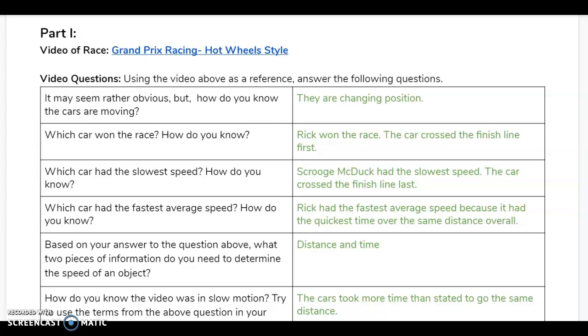Thinking about the fastest average speed, we can say that was Rick, and we know this because since he came in first, he had the quickest time over the same distance. They all traveled down the same ramp that was the same length, but Rick did it in the quickest amount of time. So he had the fastest average speed.